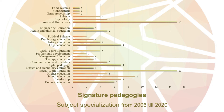The key idea of Schulman's concept of signature pedagogies is a necessity to teach how to think like a real professional. Despite Schulman's study focusing on the fields of medicine, law and the clergy only, research observes the signature pedagogy of all other professions such as agriculture, biological and computer science, mathematics, geography, physics, education and art.